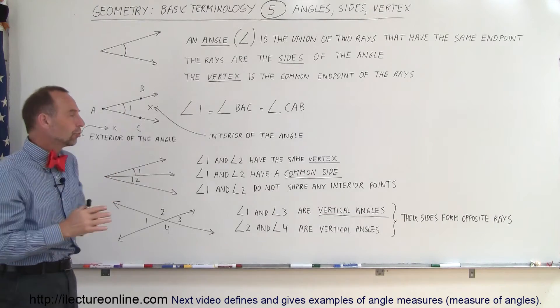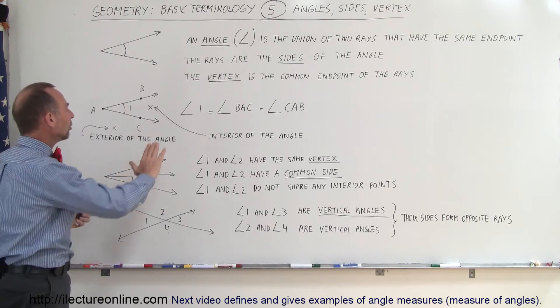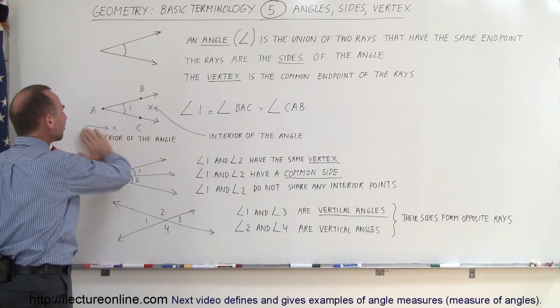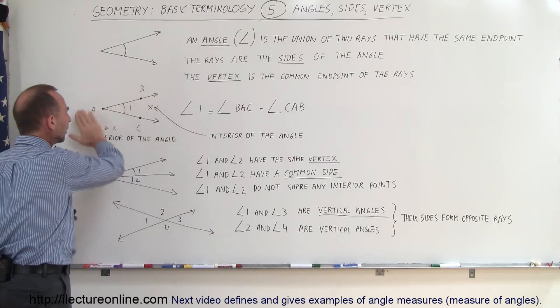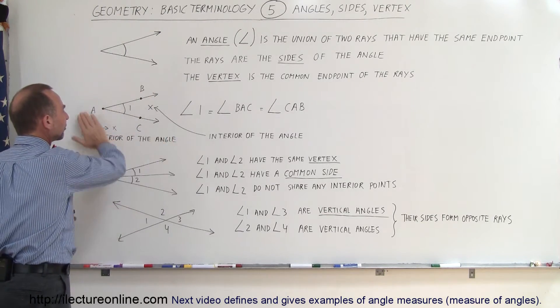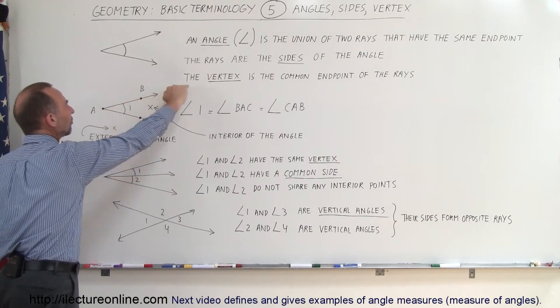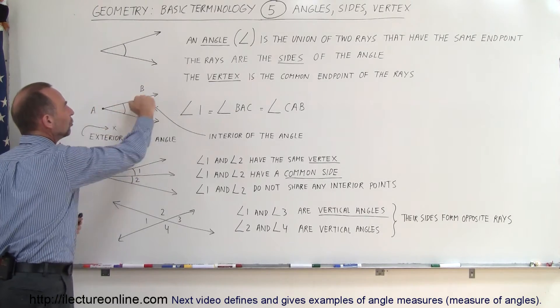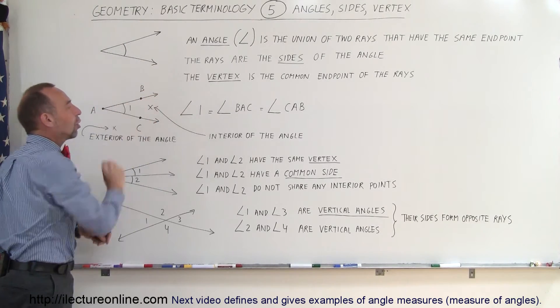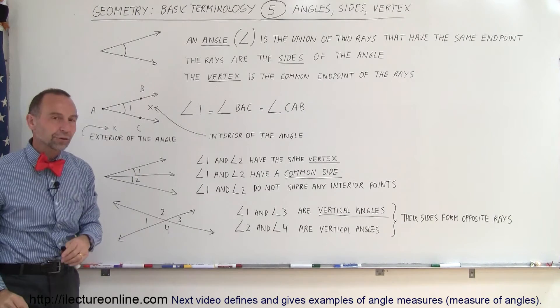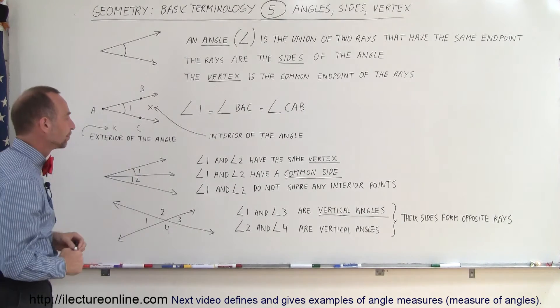With angles, we can also call all the points outside the angle the exterior of the angle. And all the points between the two rays — defined by the two rays — is called the interior of the angle.